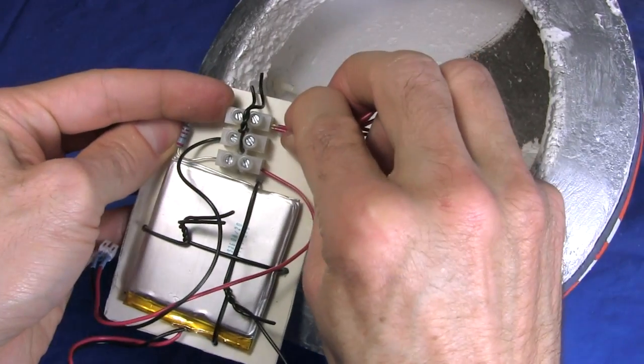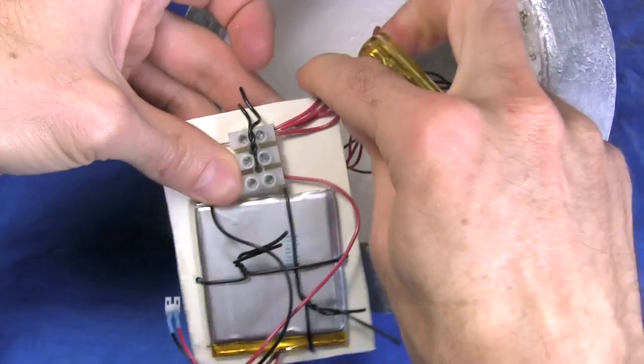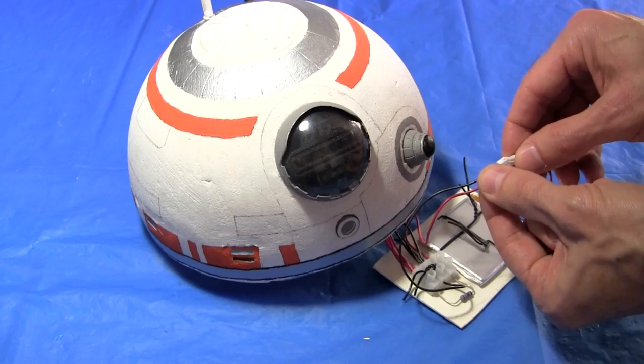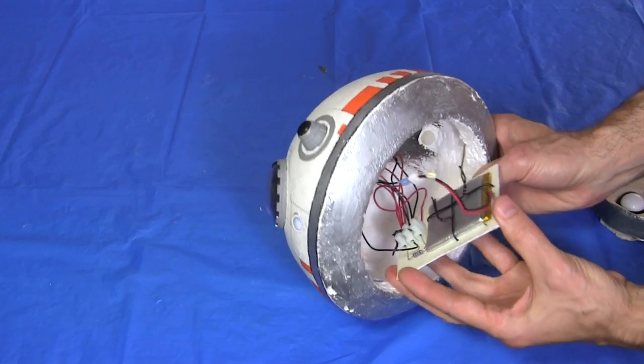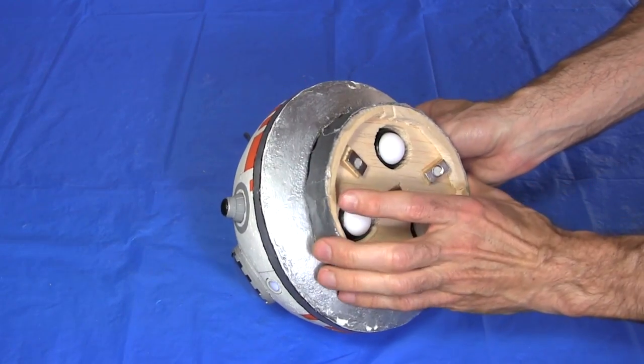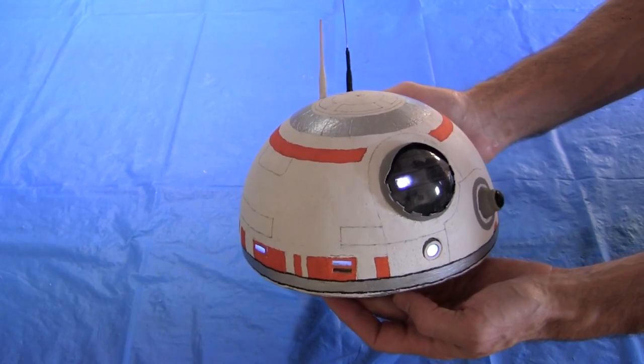Then I gather up all the positive wires going to the LEDs, and connect them. Followed by all the negative wires. Plugging the connector into the battery, the LEDs turn on. That all just sits in the head, kept in by the head support. And here it is all lit up.